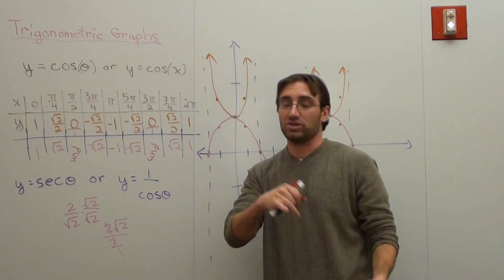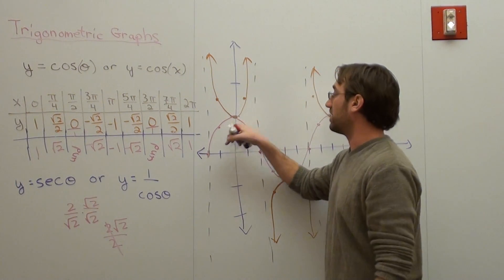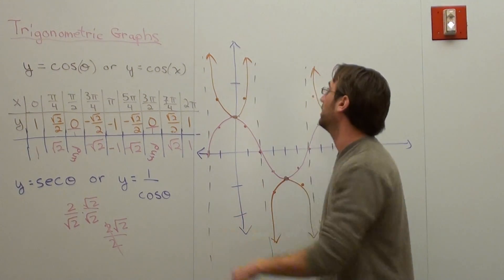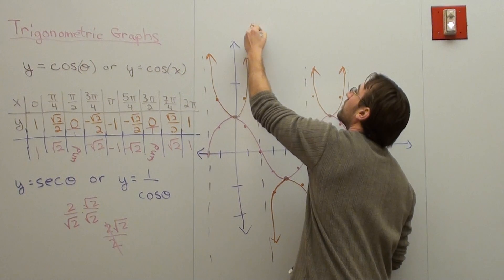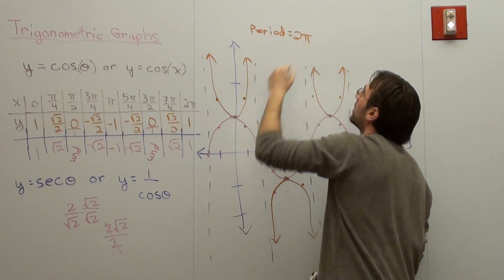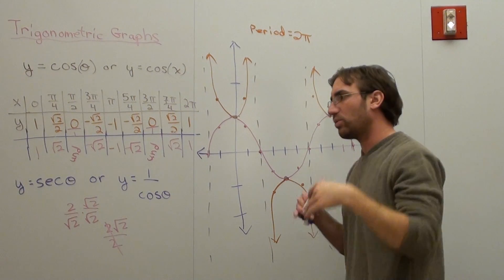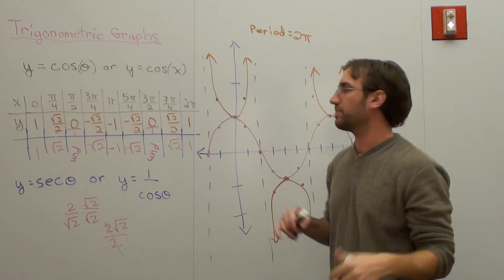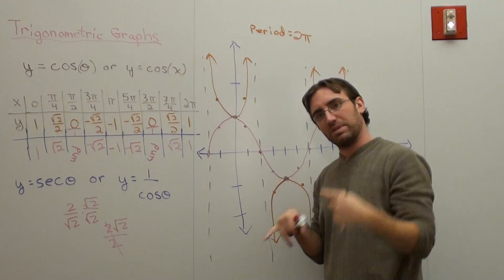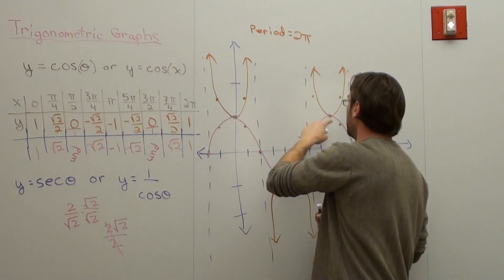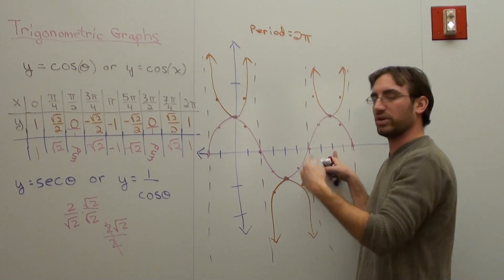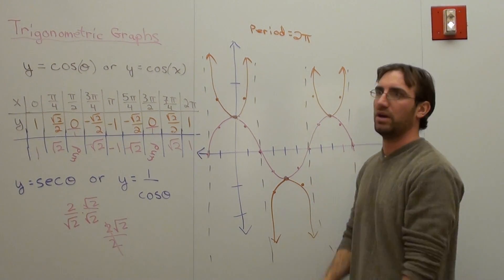The period of this graph is 2 pi. The period of the cosecant graph is also 2 pi. Period equals 2 pi — it's basically where the graph hits the same spot and repeats. Here's where it hits the same spot, and it's got to be going in the same direction — going up, going up. How far is this from this? 2 pi radians away, or 360 degrees away.